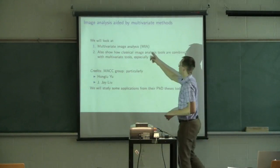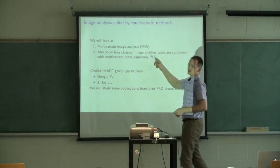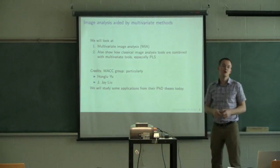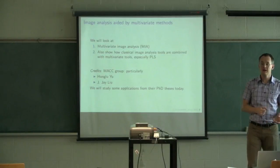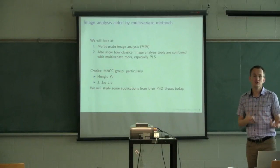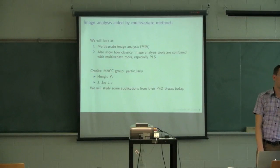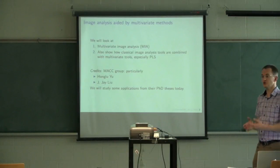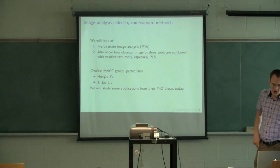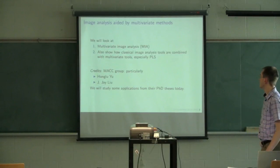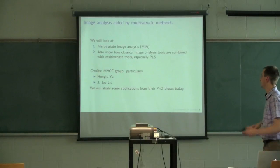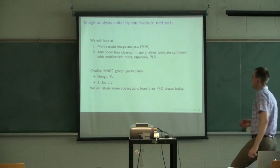The alternative you'll see more often in companies is machine vision — using cameras on the factory floor to monitor, control, and predict. We're going to look at how you can use multivariate image analysis and combine it with those traditional tools.